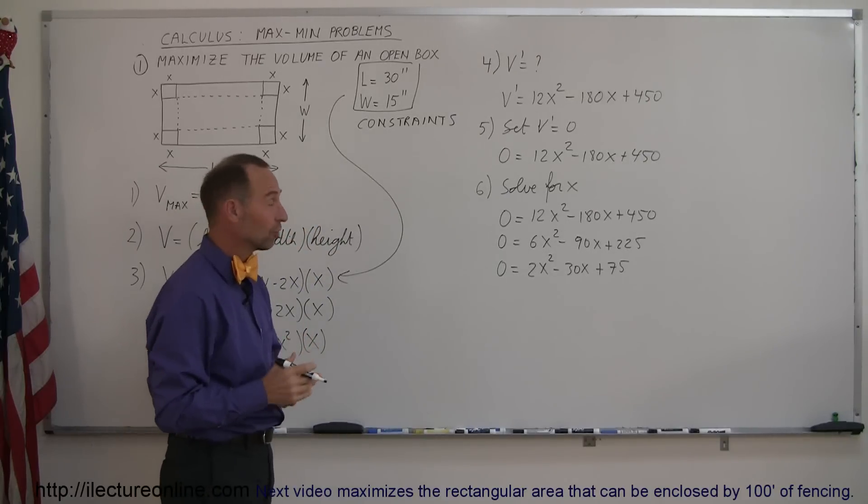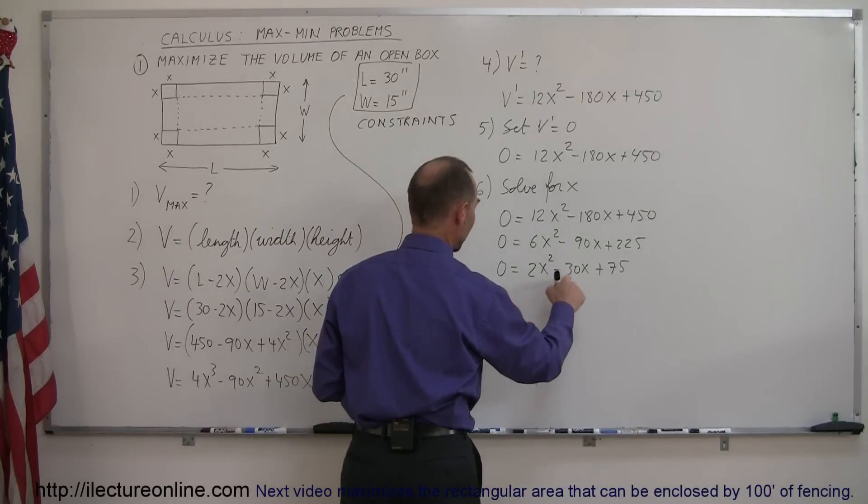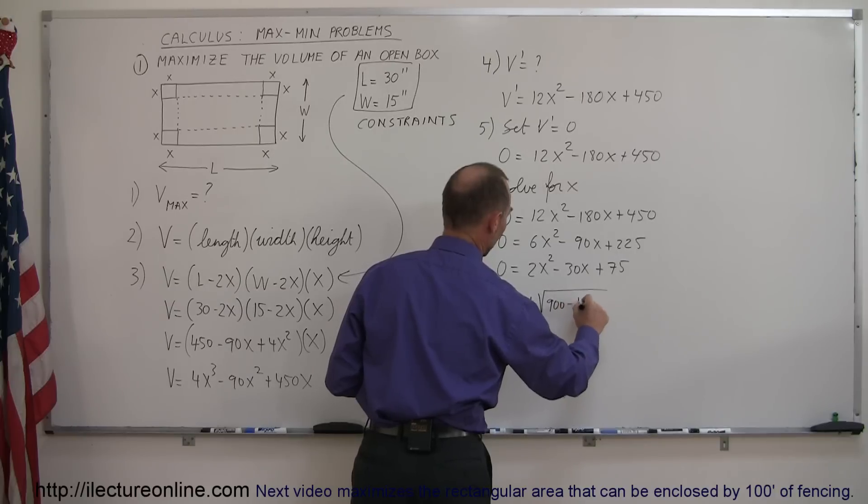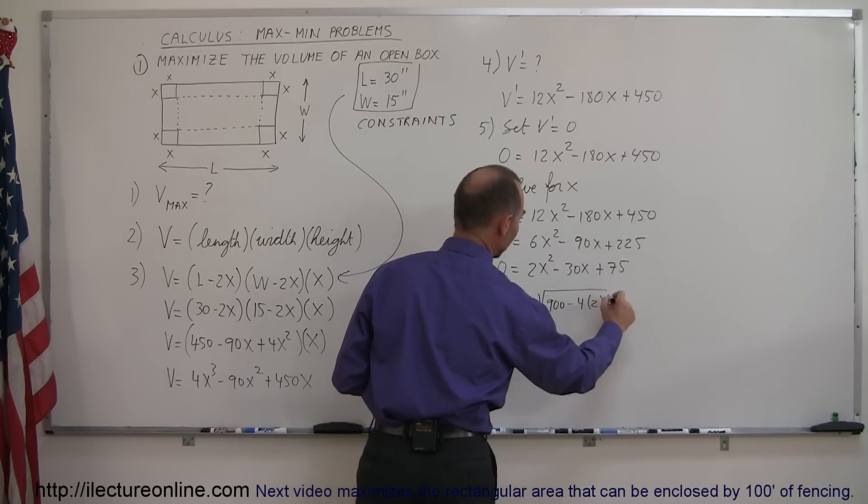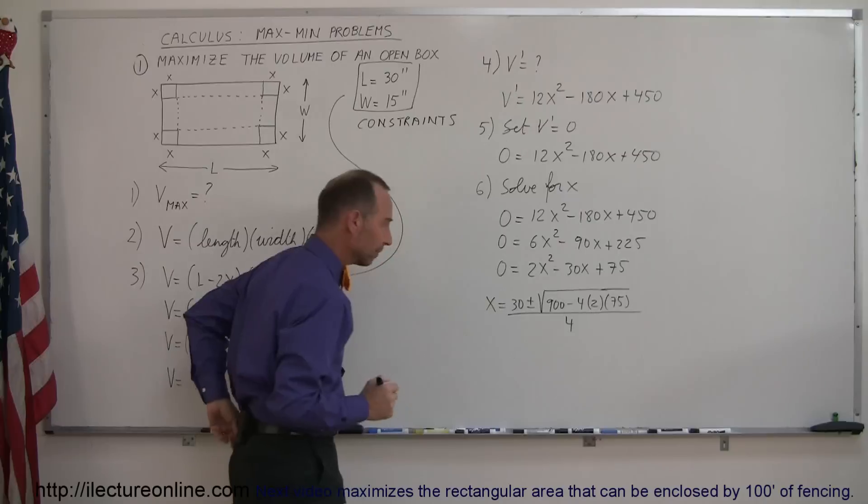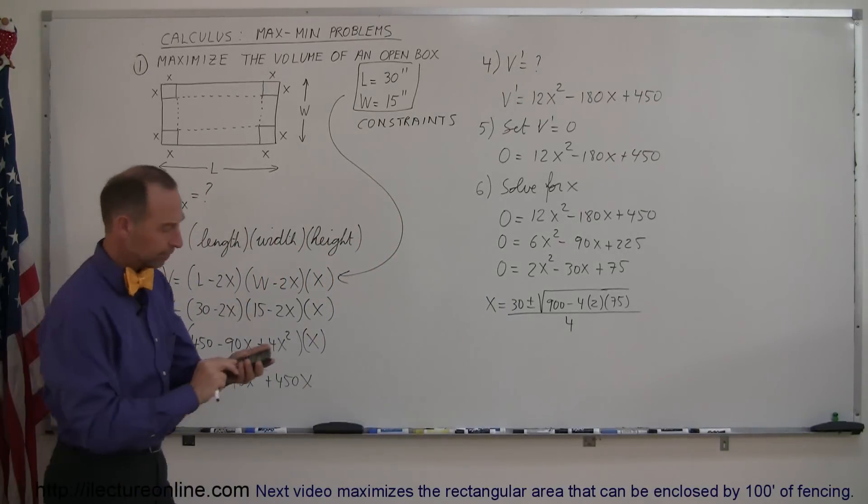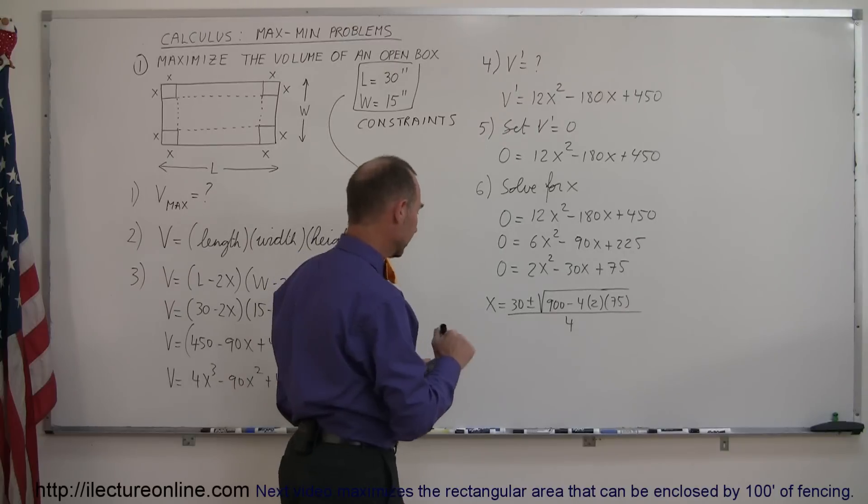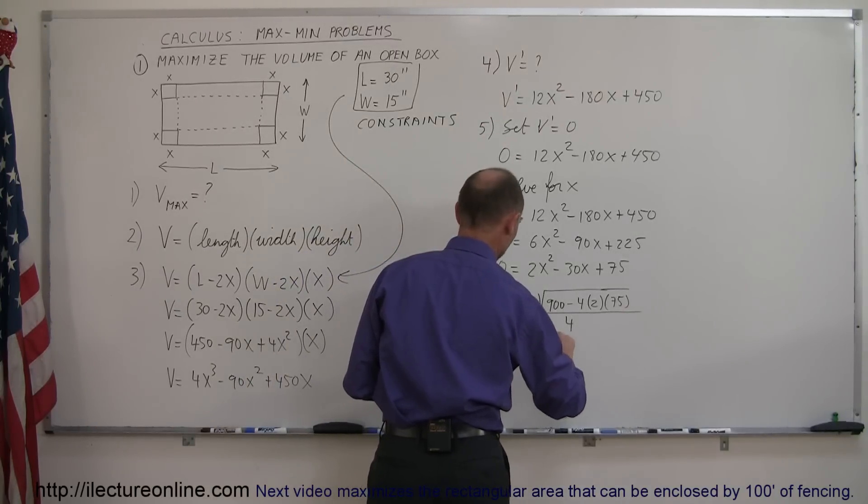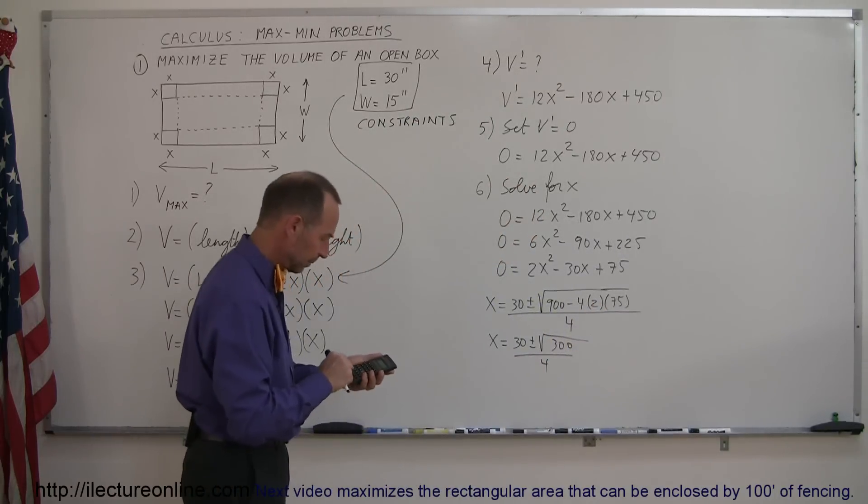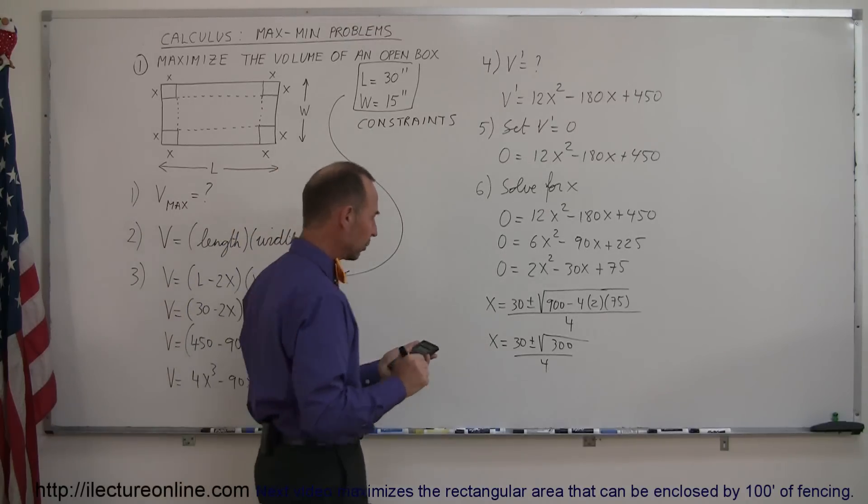Now to find x, I'm going to have to use the quadratic equation. So x is equal to minus b, which is 30, plus or minus the square root of b squared, which is 900, minus 4 times a, which is 2, times c, which is 75, and divide the whole thing by 2 times a, which would be 4. Now I need my calculator. Let's see what we get. We have 4 times 2, that's 8 times 75, that's 600, and subtract that from 900. So x is equal to 30 plus or minus the square root of 900 minus 600, which is 300, divided by 4. Take the square root of that, we get 17.32.